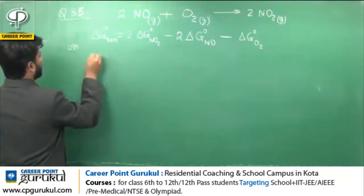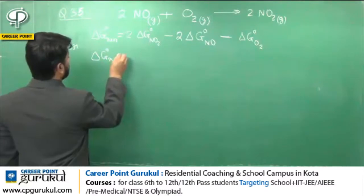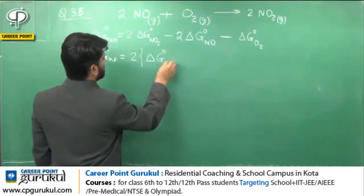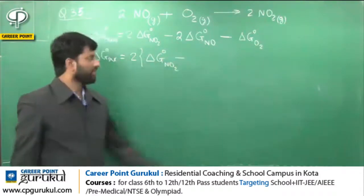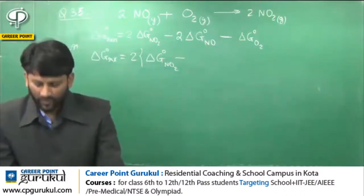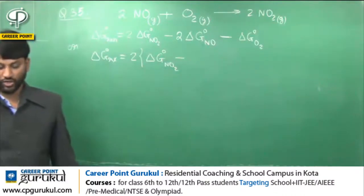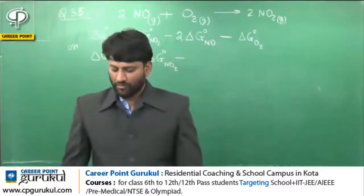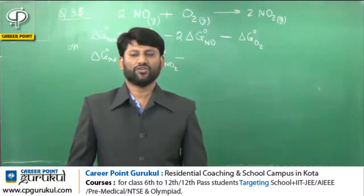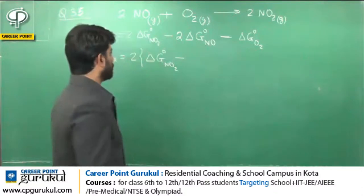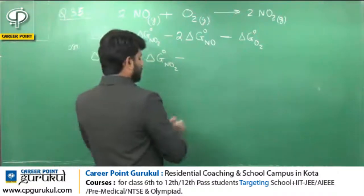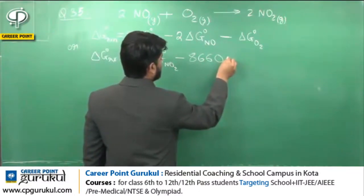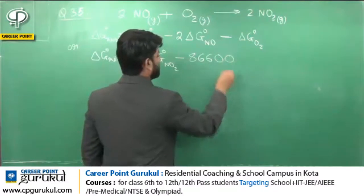यानि हम कह सकते हैं: ΔG° of Reaction = 2 × (ΔG° of NO₂ − ΔG° of NO)। ΔG° of NO दे रखी है 86.6 kJ/mol। Options observe किये तो पता लगा कि answer Joules में चाहिए, तो kilojoules को Joules में बदलेंगे - 1000 से multiply करना पड़ेगा, तो 86.6 kJ = 86600 J।